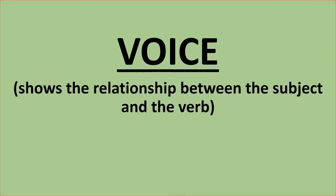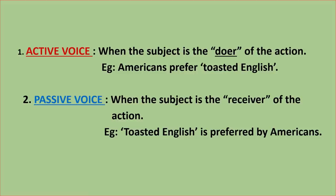Now the next item is voice — that is active or passive voice. It shows the relationship between the subject and the verb. Active voice is used when the subject is the doer of the action — for example: 'Americans prefer toasted English.' Whereas passive voice is used when the subject is the receiver of the action — for example: 'Toasted English is preferred by Americans.'